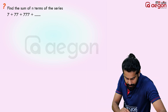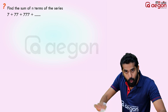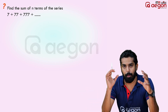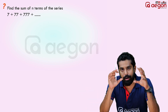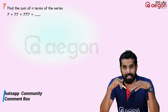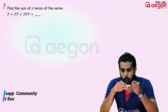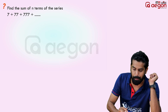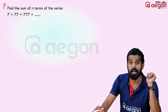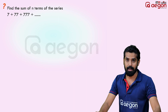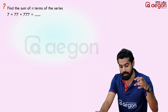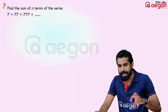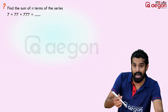So the question is: 7 + 77 + 777 + ... what is the sum up to n terms? It is actually a GP-related series. Like 7, 77 multiplied, 777 multiplied — that is also why it is GPL. It is related to GP.